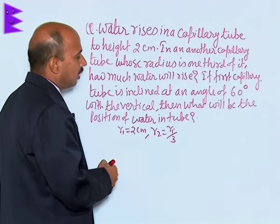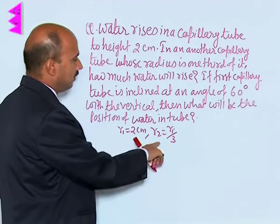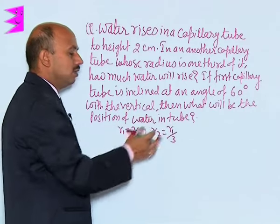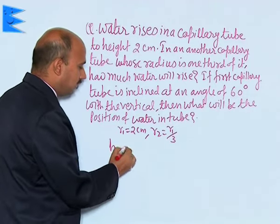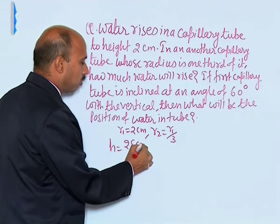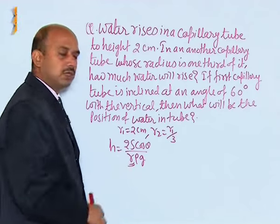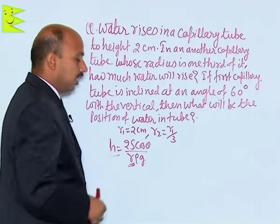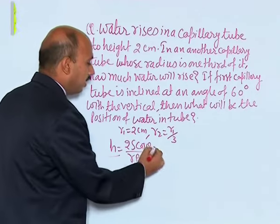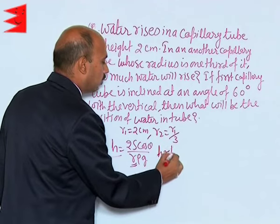Now we have to check how much water will rise if the radius reduces to 1 by 3. We can write this formula: h is equal to 2s cos θ upon r ρ g, where r is the radius of the tube, h is the height to which the liquid rises. It means h is proportional to 1 by r.